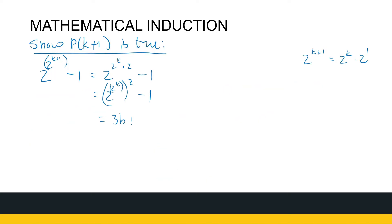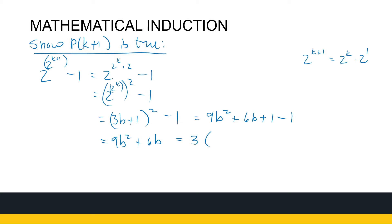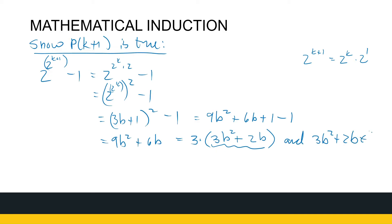So that becomes (3B + 1)² minus 1. Multiplying that out: 9B² + 6B + 1 minus 1, which gives us 9B² + 6B. We can take 3 out as a common factor, giving us 3 times (3B² + 2B). And 3B² + 2B is an integer because B is an integer.